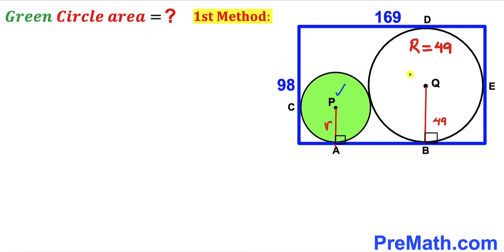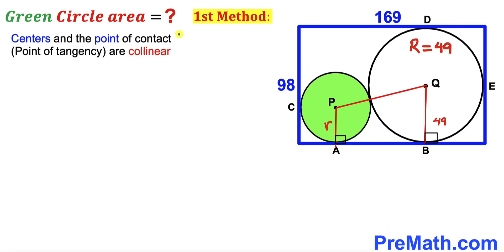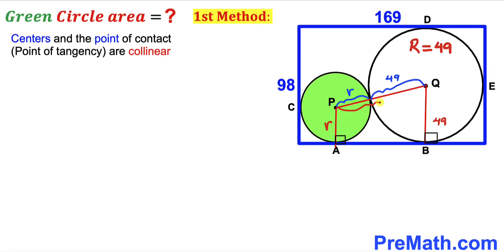In this next step I'm going to connect the two centers P and Q. Let's recall the crucial fact that centers and points of tangency are collinear, so centers P and Q and the point of tangency all lie on the same line. We can see this segment from the larger circle has radius 49 and the smaller circle has radius r, so the whole segment PQ has length r plus 49.